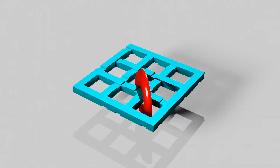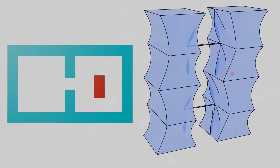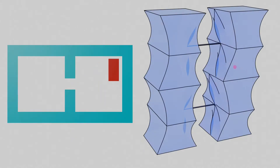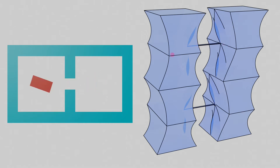We solve challenging disentanglement puzzles. This 2D example shows the difficulty. Puzzle configuration spaces have hard-to-find narrow tunnels that connect large bubbles of free motion.